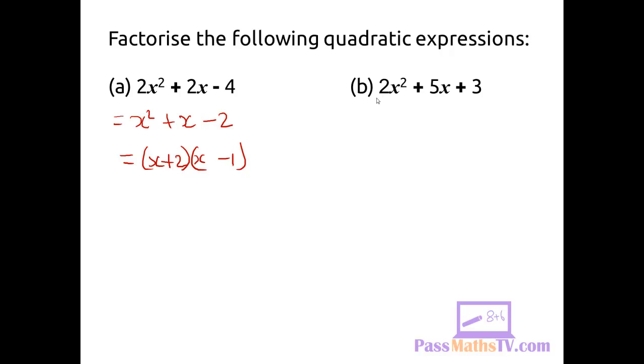I'm going to multiply this number in front of the x squared by the number that's on its own. And I get 6. Then I'm looking for two numbers that when they multiply they give me 6 but add to give me 5. And those two numbers are 2 and 3.